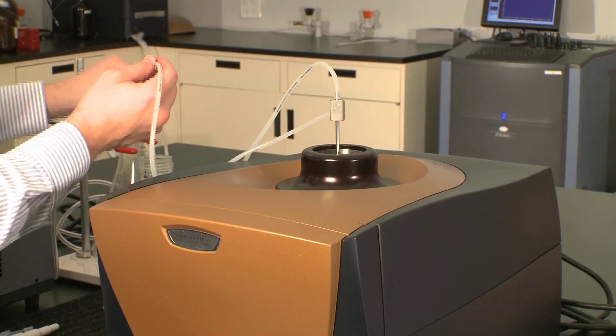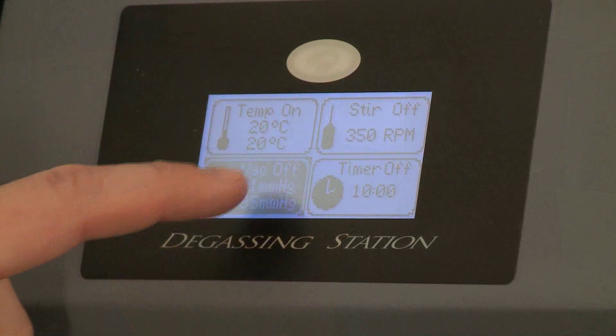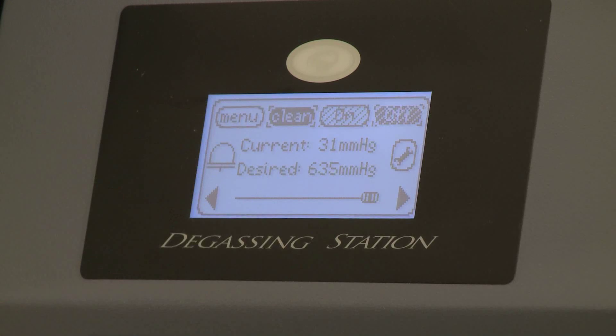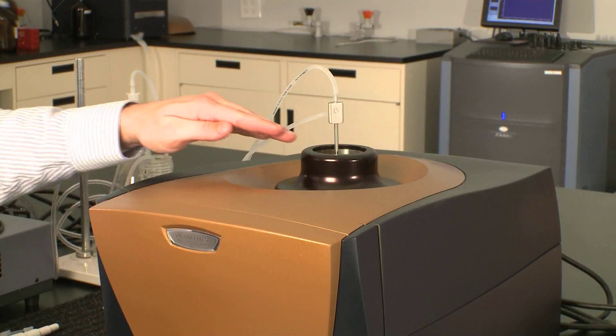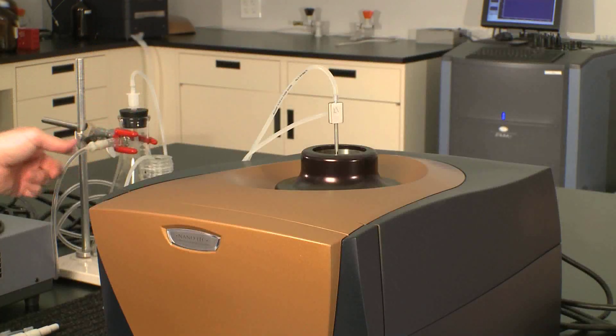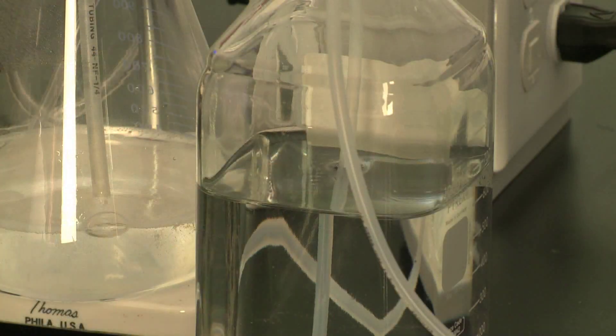Here we're going to be rinsing through about a liter of water. Come over to my degassing station and hit the clean button. You can see that suction was created, and now I'm flushing liquid through my ITC cell.